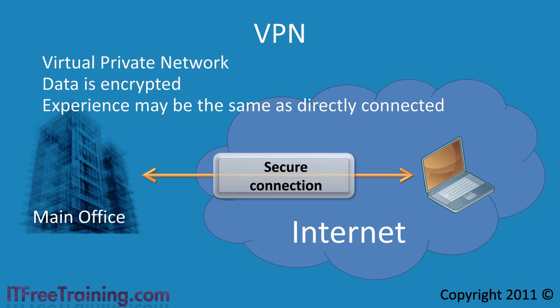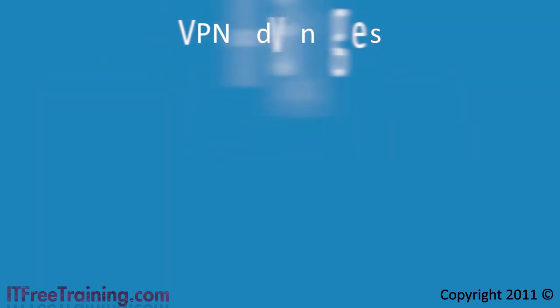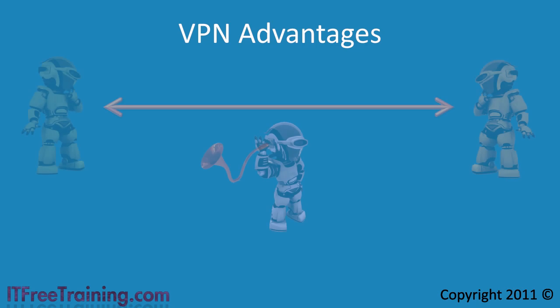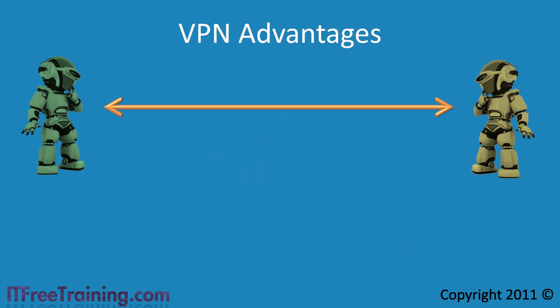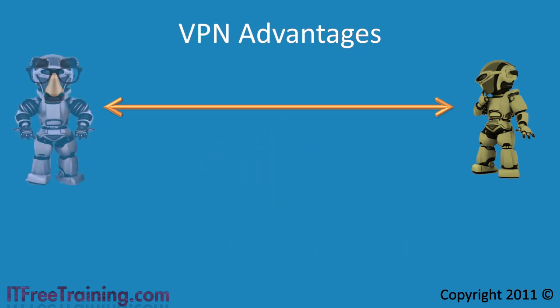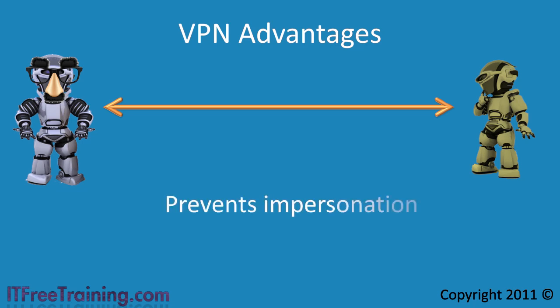Although it is possible to have an unsecure connection back to your office, having an encrypted VPN connection gives you a lot of advantages. The encryption feature prevents your traffic from being intercepted, often referred to as eavesdropping. You can also get other features such as integrity checking. Integrity ensures that the connection on both sides is from who it says it is from, preventing someone from impersonating either the server or the client.